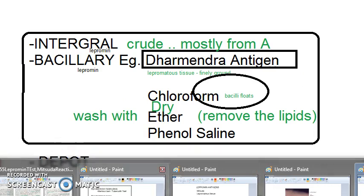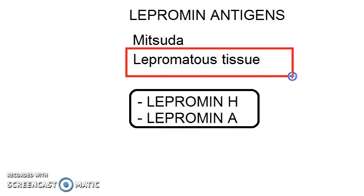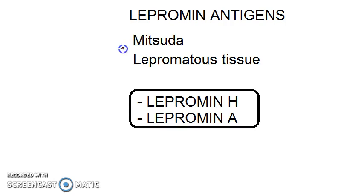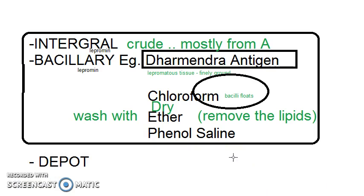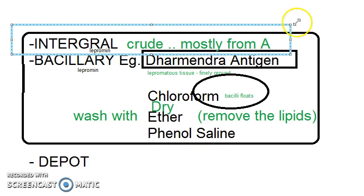To summarize: lepramine was the original antigen taken from lepromatous tissue — boiled and emulsified lepromatous tissue itself becomes the original lepramine antigen. There can be two sources of this lepromatous tissue: either a human source or the nine-banded armadillo. The actual types of antigen injected are integral lepramine or bacillary lepramine. Integral lepramine is crude and mostly taken from the armadillo nowadays.